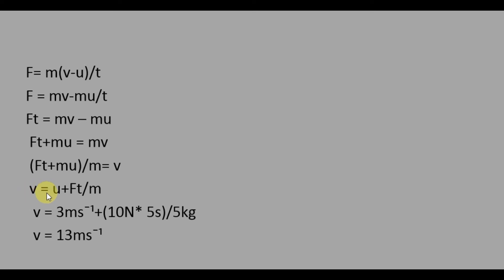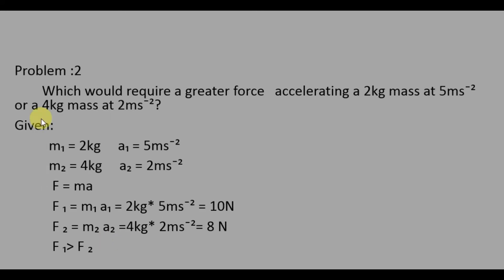V = U + FT / M. Substitute the values of U, F, T, and M into this equation. We get V = 13 m/s. The next problem is: which would require a greater force — accelerating a 2 kg mass at 5 m/s², or a 4 kg mass at 2 m/s²?